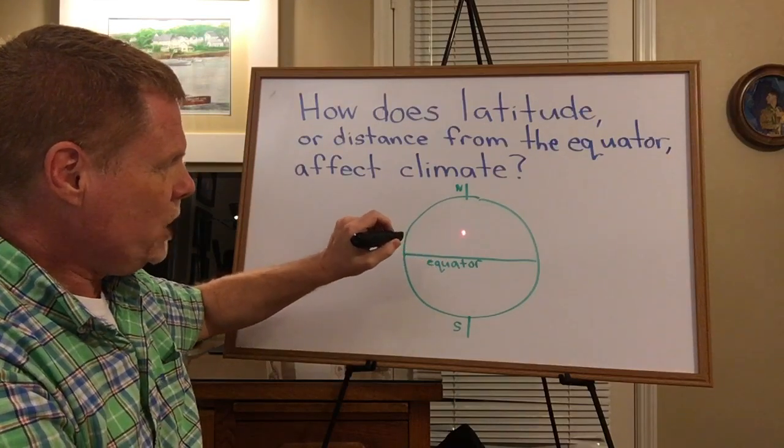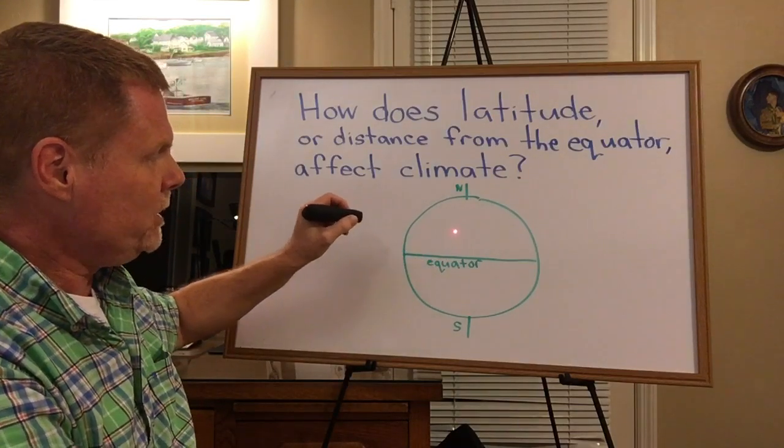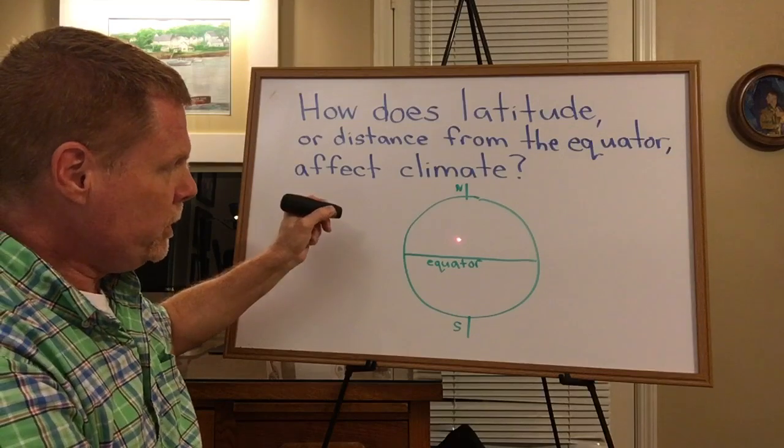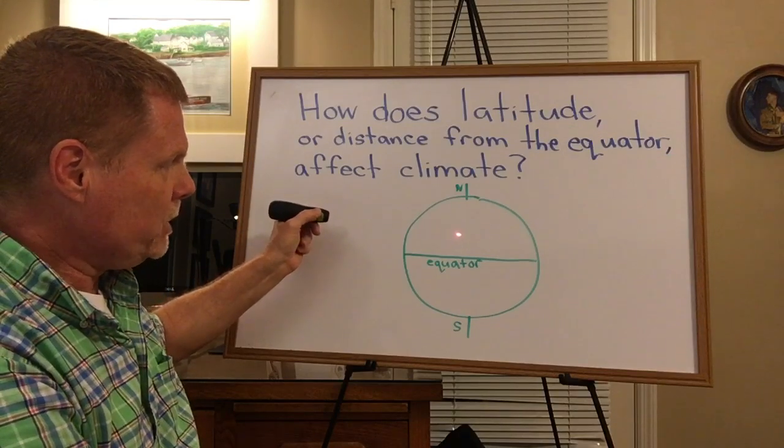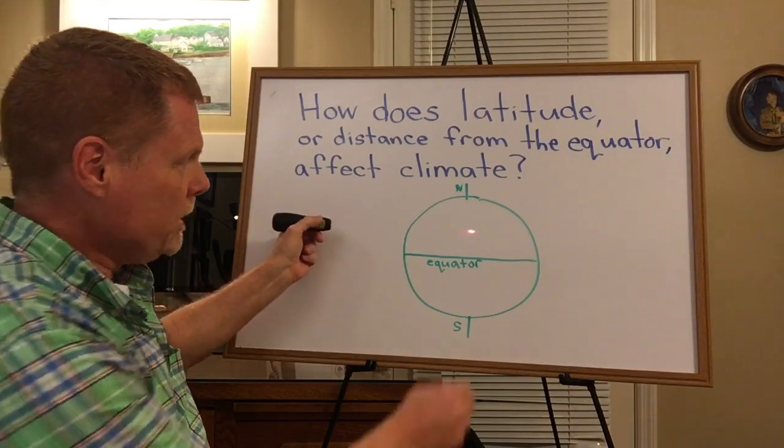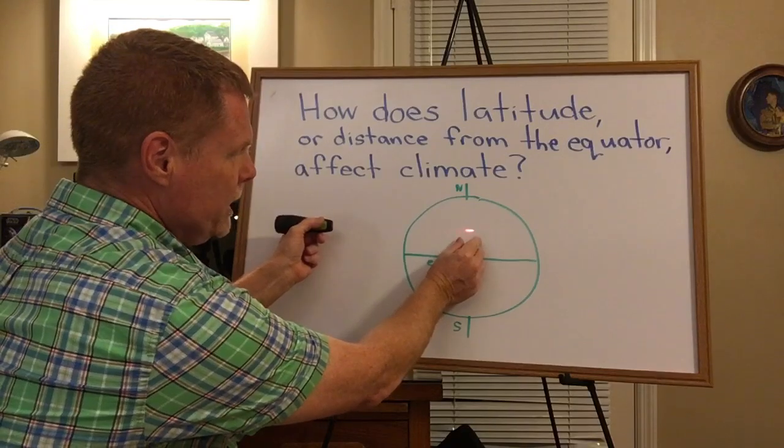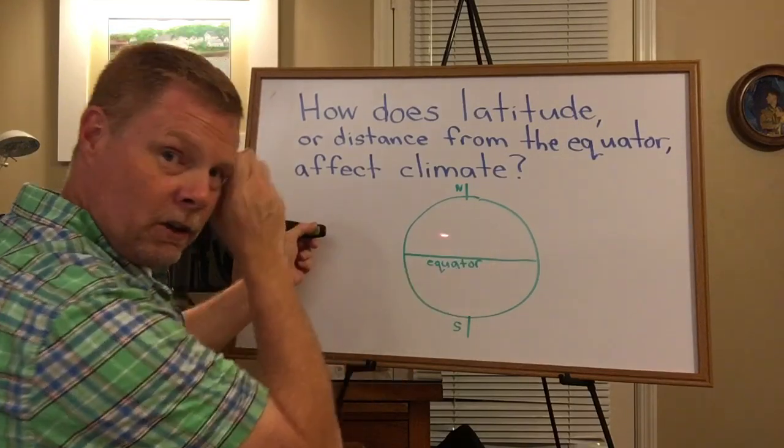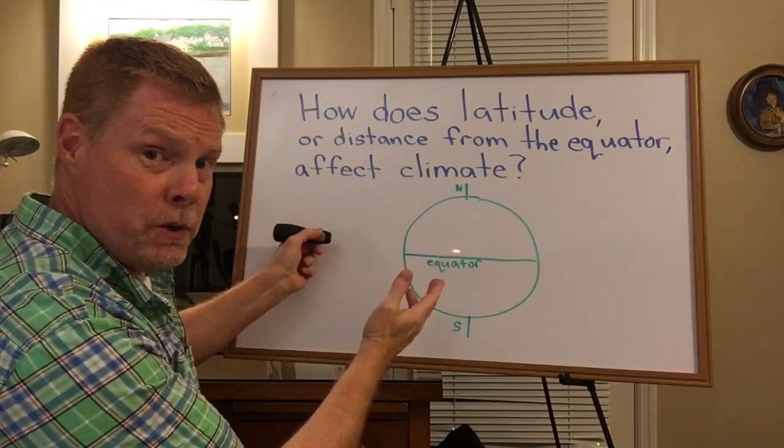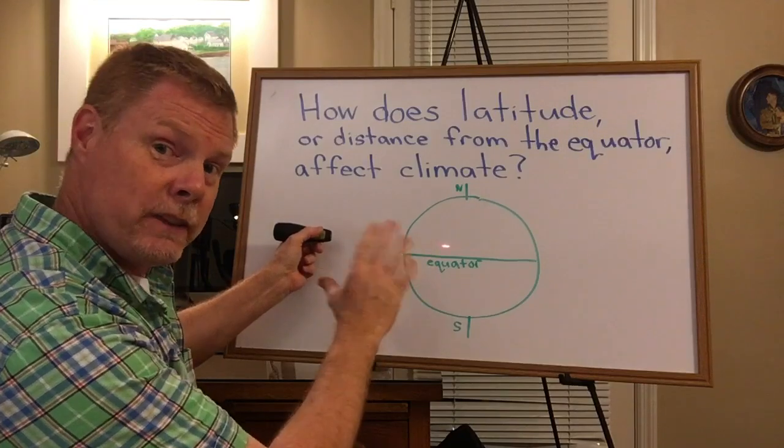And then as I change the angle and tilt it, notice that it's changing from a dot and it's starting to spread out now. See how that laser pointer, that light, is starting to spread. And if we could measure that, we would notice that that light's actually getting dimmer.